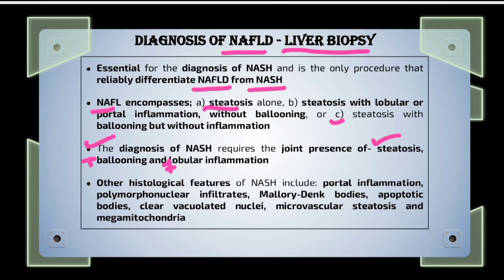Apart from these, other histological features for diagnosis of NASH include portal inflammation, polymorphonuclear infiltrates, presence of Mallory-Denk bodies, apoptotic bodies, clear vacuolated nuclei, microvascular steatosis, and presence of mega mitochondria in such patients.